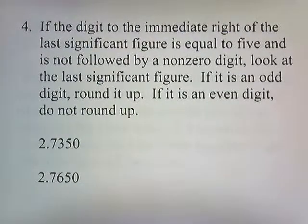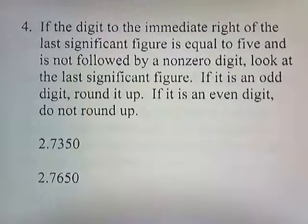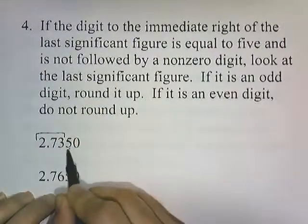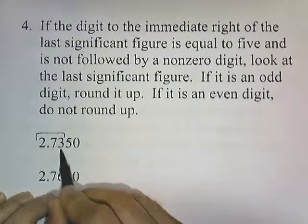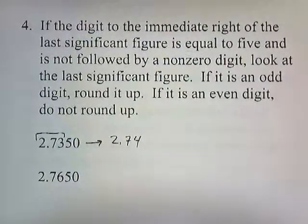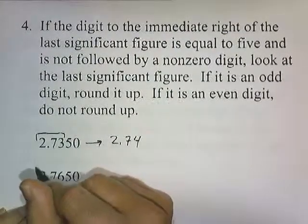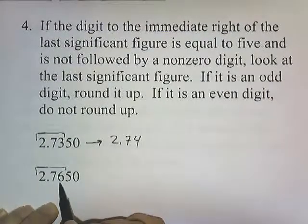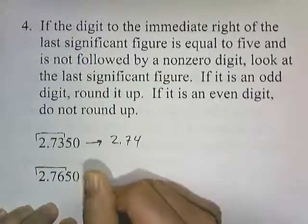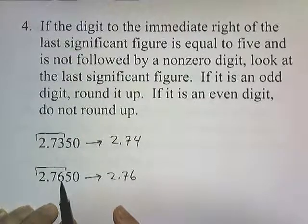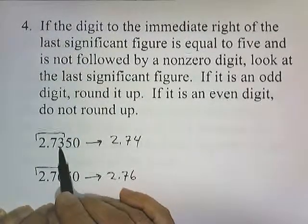If the digit to the immediate right of the last significant figure is exactly 5 and not followed by a non-zero digit, look at the last significant figure itself. If it's an odd digit, round it up; if it's an even digit, do not round up. For example, rounding 2.735 to three digits: 3 is odd, so we round up to 2.74. But for 2.765, 6 is even, so we leave it as 2.76.